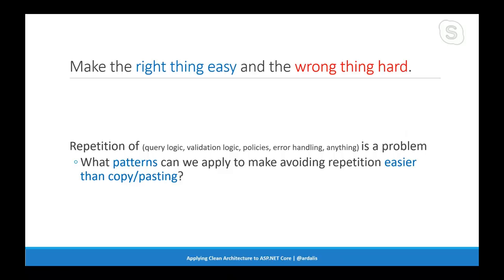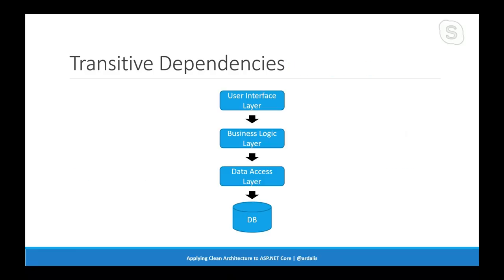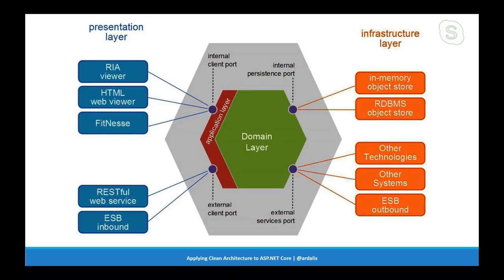If we have a lot of repetition — like the same DB context calls in every controller over and over — that repetition makes it harder to change directions, swap in a different implementation, and violates the don't-repeat-yourself principle. Are there patterns we can use to reuse things like query logic and validation logic in a less repetitive way? Here's an example of the issue if you don't follow clean architecture: a data layer talks to a database, a business layer calls the data layer, a UI layer calls the business layer. These transitive dependencies mean everything depends on the database, which makes it really hard to test in a performant way.